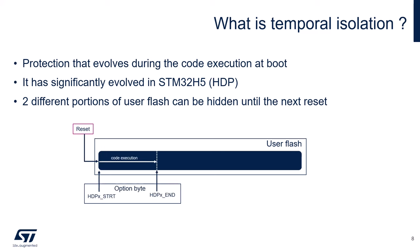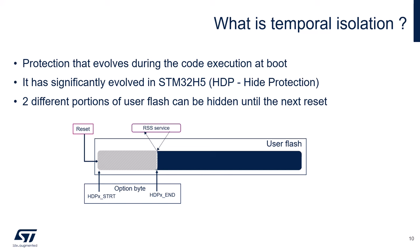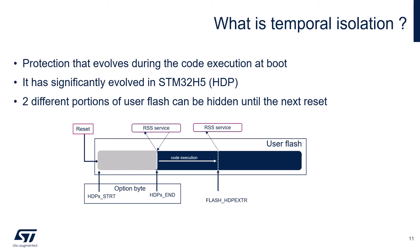How does this work? First, we set the HDP watermarks — start and end — through the option bytes. At Reset, we start executing our first stage bootloader code. Then we call a root security service and close and hide this portion of the user flash. The root security service is part of the ST-ROM code and is dedicated to security management. Then the next code execution starts — our second stage bootloader — and we can set the new HDP limit through a specific flash register. At this point, we call again a root security service to close and hide this second portion of the flash. Now we can start executing the user application without any risk of jumping or accessing the hidden parts of the user flash.